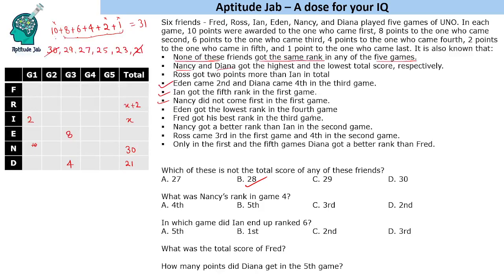Eden got the lowest rank in the fourth game. Now Nancy is the one who is not going to get the 1-point value overall, so Eden will get 1 point in game four. Fred got his best rank in the third game. Since Dinah is the person who never gets 10 points, Fred's best must be 10, so Fred gets 10 points in game three.